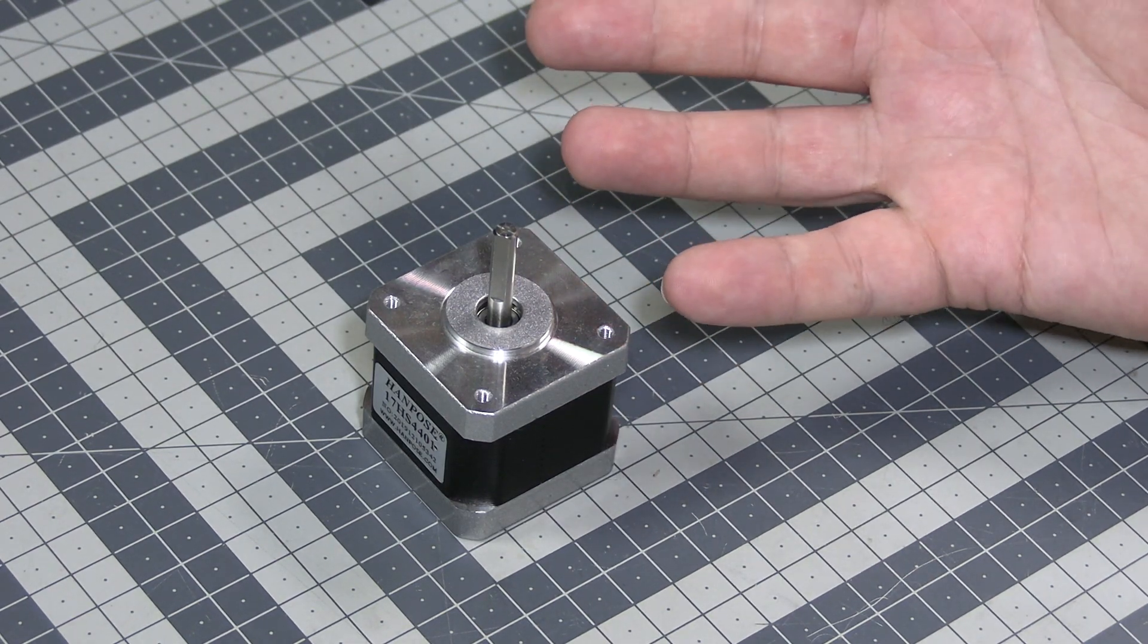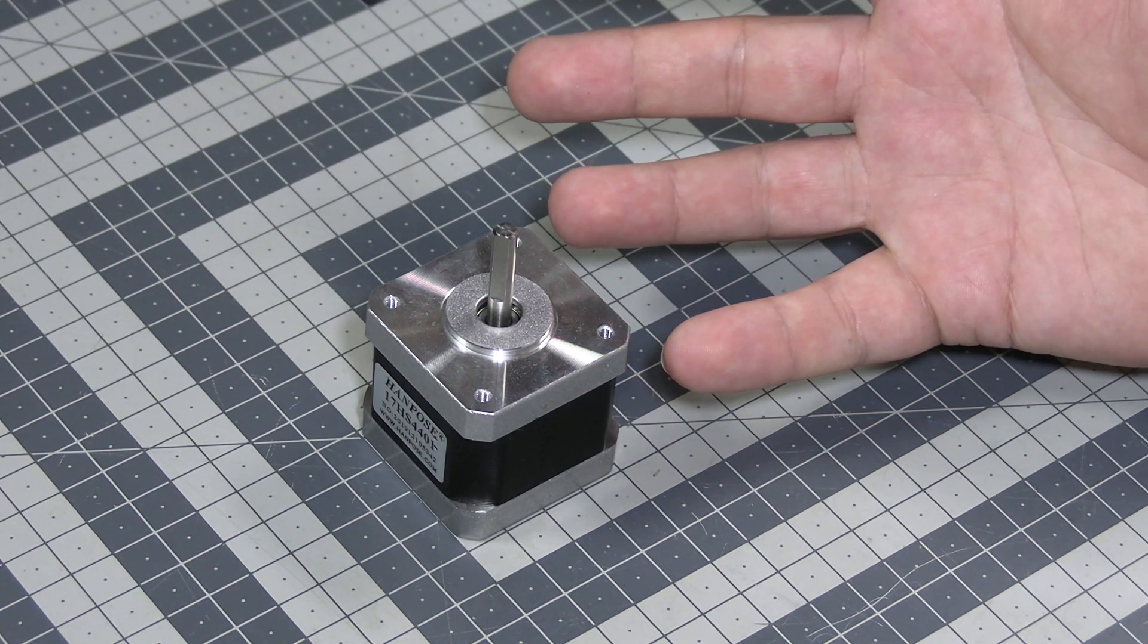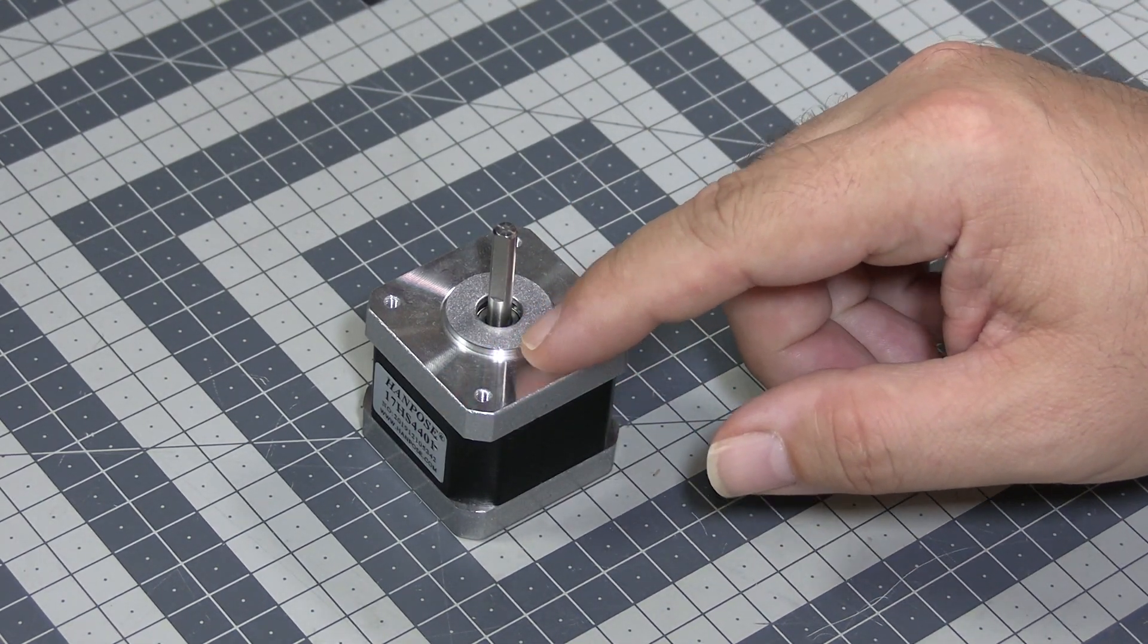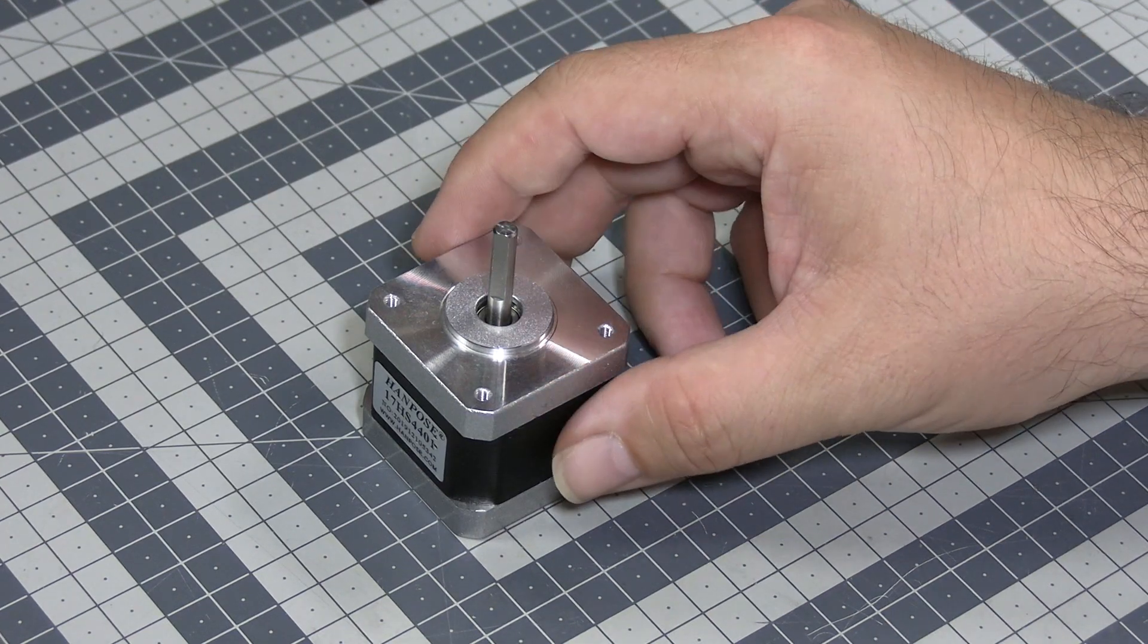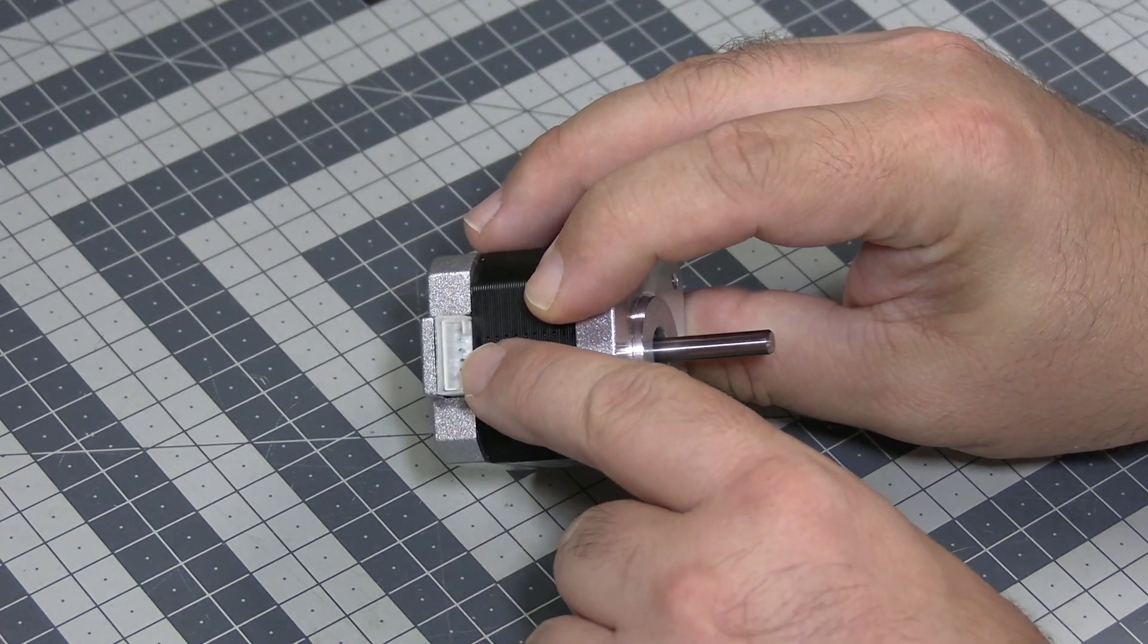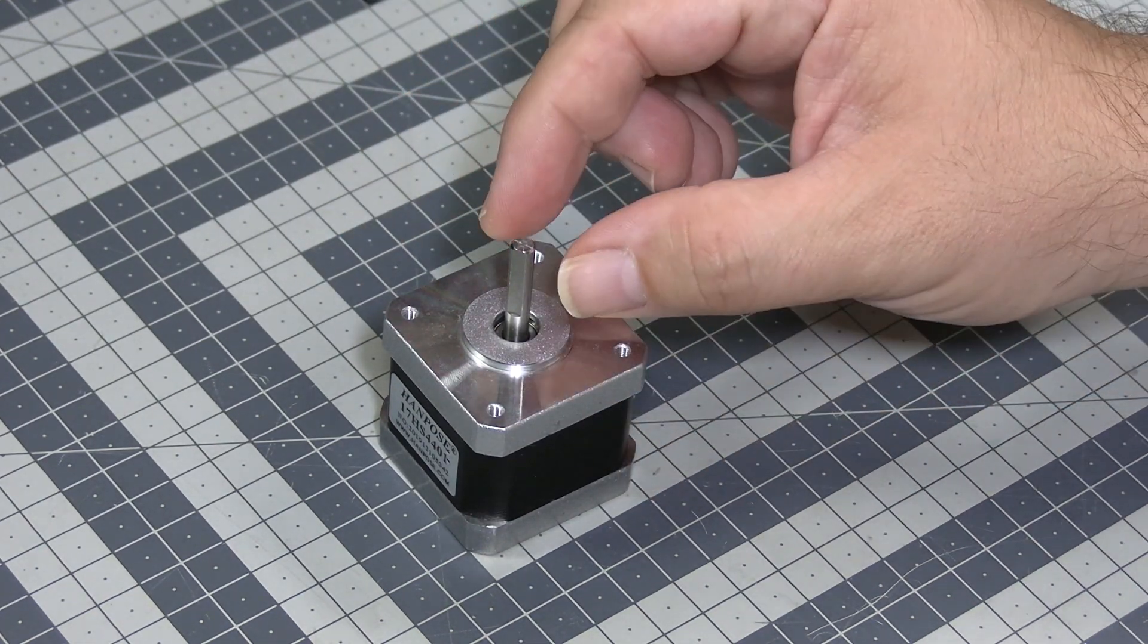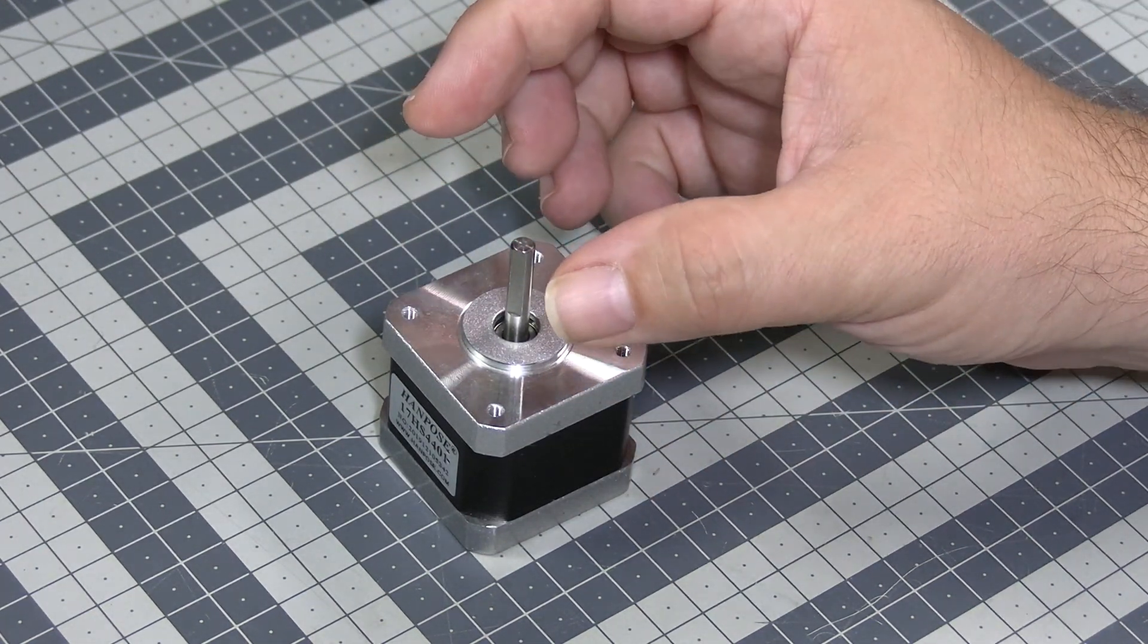What's a stepper motor? Well, it's an electric motor. However, compared to other kinds of electric motors, when you apply voltage to the coils - and usually this one has four pins and two sets of coils - it will not start to rotate. It will only rotate one step.